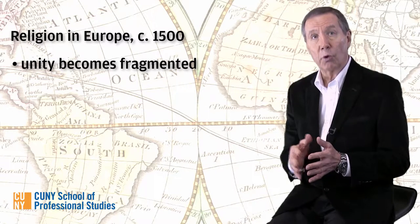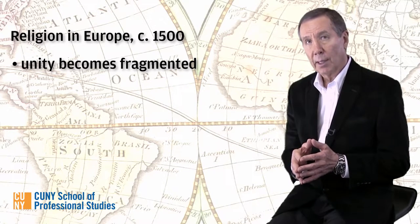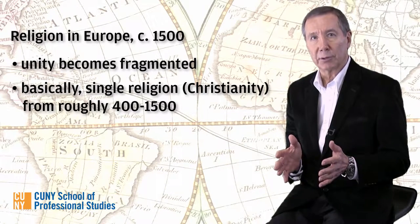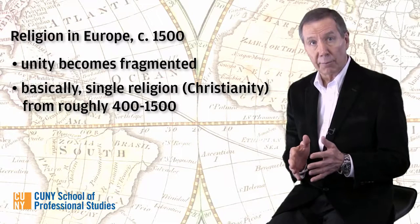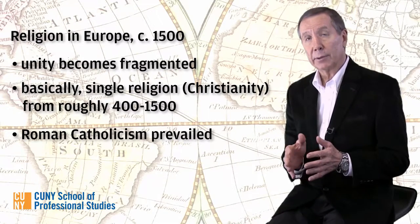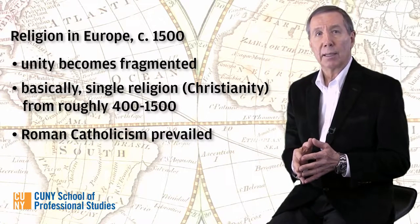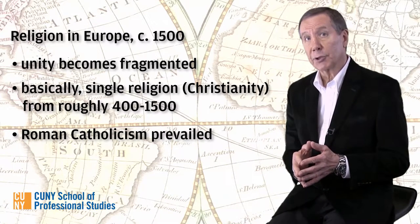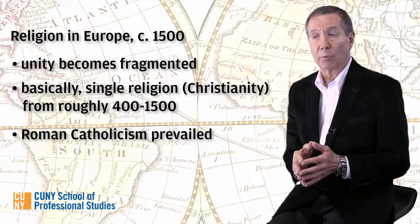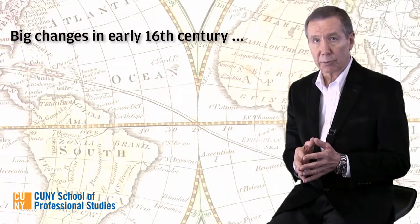From the standpoint of religion, which we'll talk about first, the direction is from unity toward fragmentation. In Western and Central Europe, the unity of religious belief was more than a thousand years old, dating from the conversion of Western Europe to Christianity toward the end of the Roman period. And until the 16th century, for the most part, Catholic Christianity was the dominant religion in Europe, with its capital in Rome. In the early 16th century, that unity was disrupted.